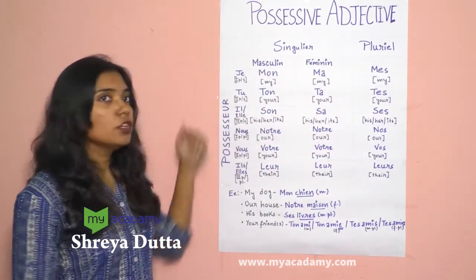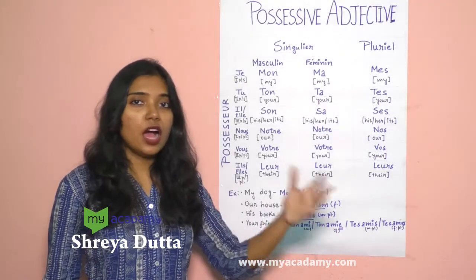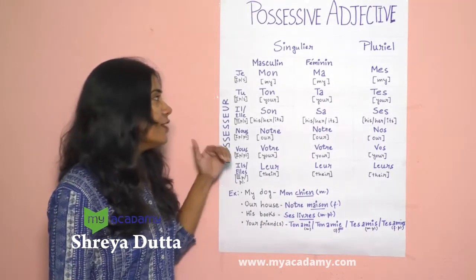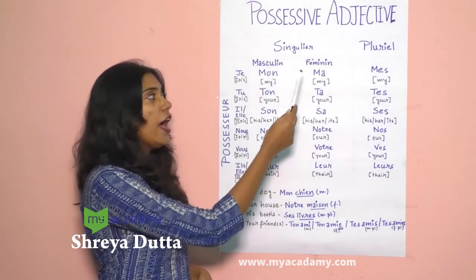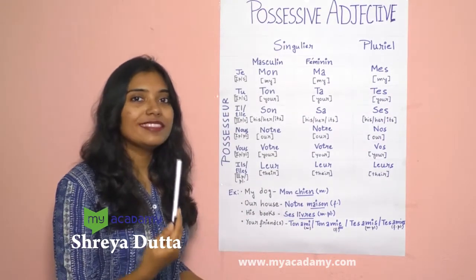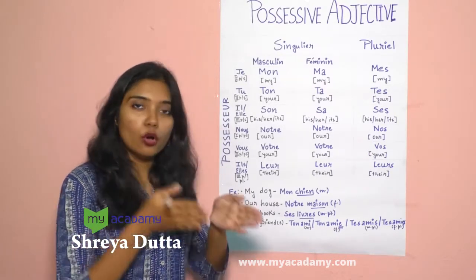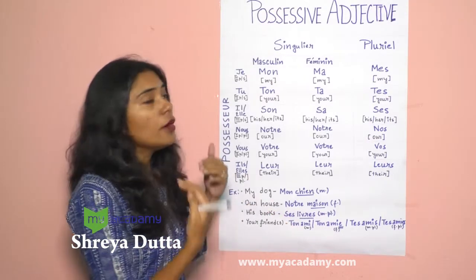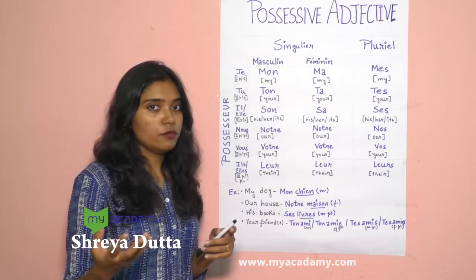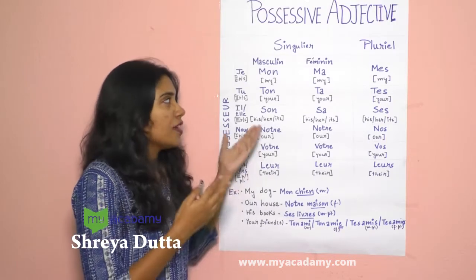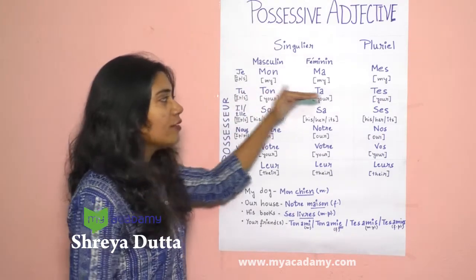Next is tu, meaning you. Anything related to you becomes your — your book, your pen, your house, your class, your family — anything. So for tu: ton for masculine singular, ta for feminine singular, and tes for masculine and feminine plural. If the noun is masculine, use ton before it. If feminine, use ta. And if the noun is plural — be it masculine or feminine — use tes.